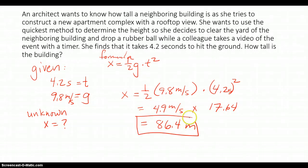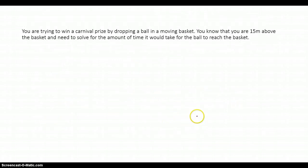Let's try another one. So here we have you wanting to win a carnival prize by dropping a ball in a moving basket. So you know you are 15 meters above the basket and you need to solve the amount of time it would take for the ball to reach the basket. So a couple of things. Again, let's do our givens. So for our givens, I know that my distance, this case it's x or d, you can use either one, is 15 meters. Alright? What am I looking for? My unknown is time. So I do not know what time is and I'd like to know what it is.